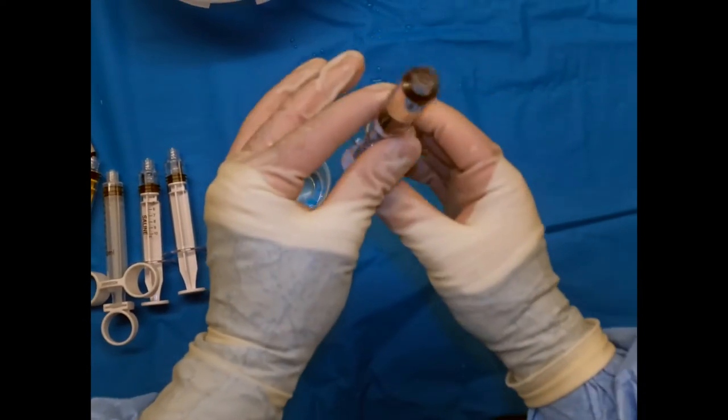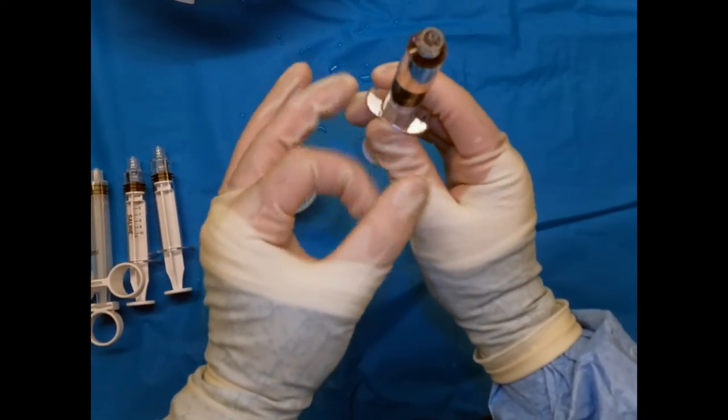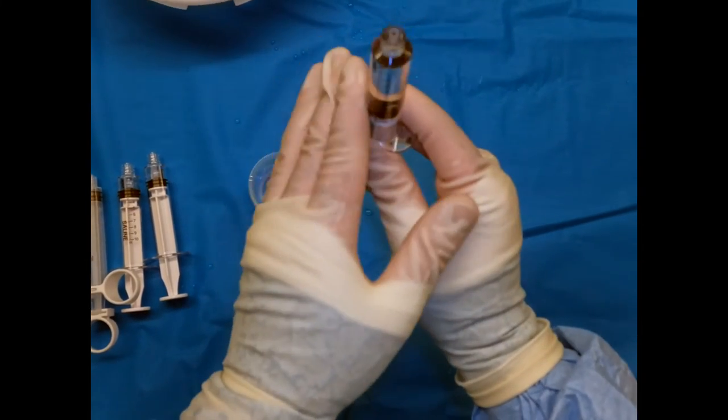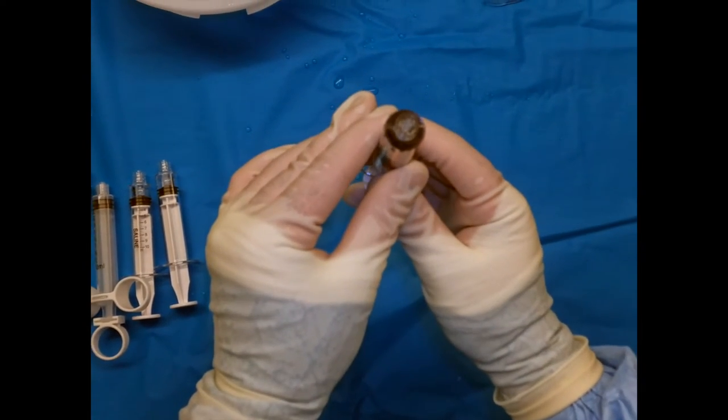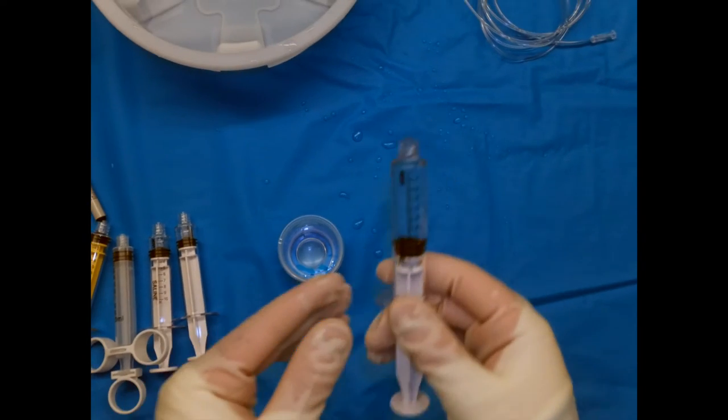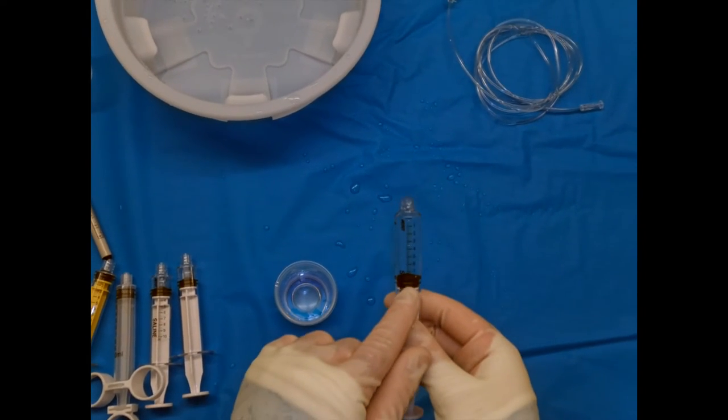Up around the plunger right there. So we're going to now face it all the way up and tap to get the bubble to the top, and we'll push the air out.